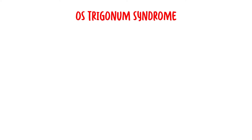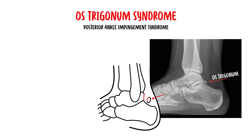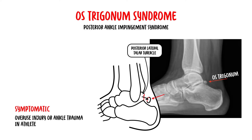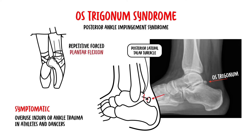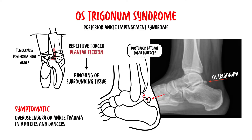Os trigonum syndrome is referred to as posterior ankle impingement syndrome. An os trigonum is the result of a fracture of part of the posterior lateral talar tubercle, or an unfused ossicle. Typically it is asymptomatic; however, it can become symptomatic following an overuse injury or ankle trauma in athletes and dancers performing repetitive forced plantar flexion, such as in ballet dancing. This causes pinching of the surrounding tissue against the os trigonum. Pain is mainly at the posterior ankle, worse with plantar flexion, with tenderness at the posterior lateral ankle region.